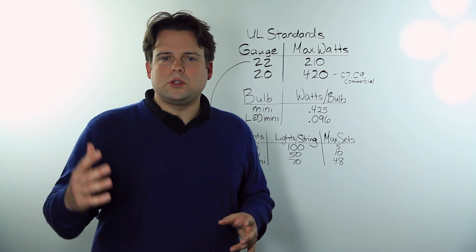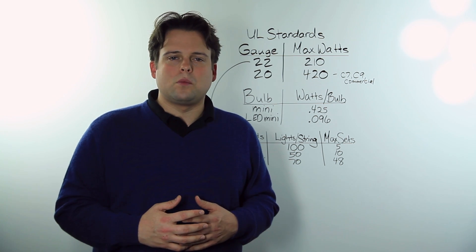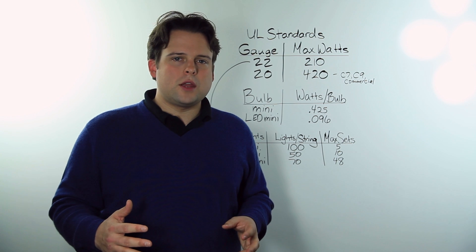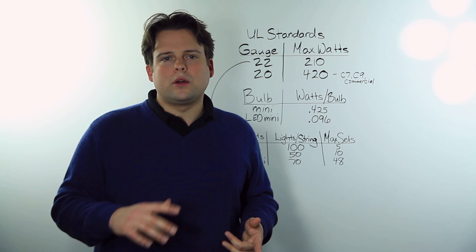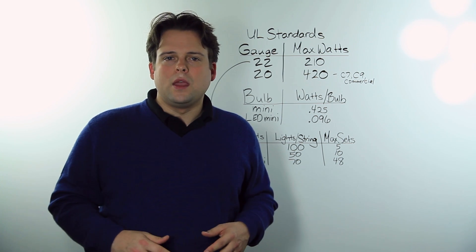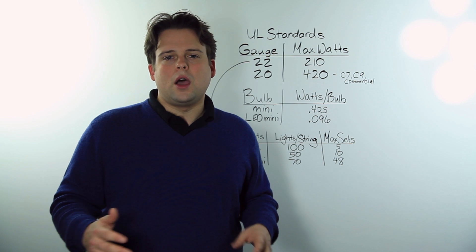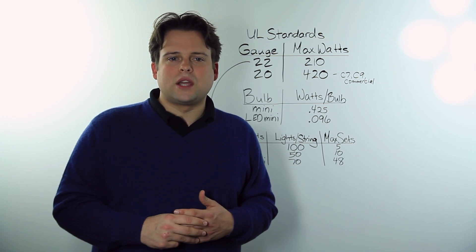UL standards state that a 22 gauge wire can safely support up to 210 watts connected. A 22 gauge wire is what you'll find used most frequently on mini lights and pre-lamped LED strings, which typically means that you can have up to 500 mini lights connected at one time.